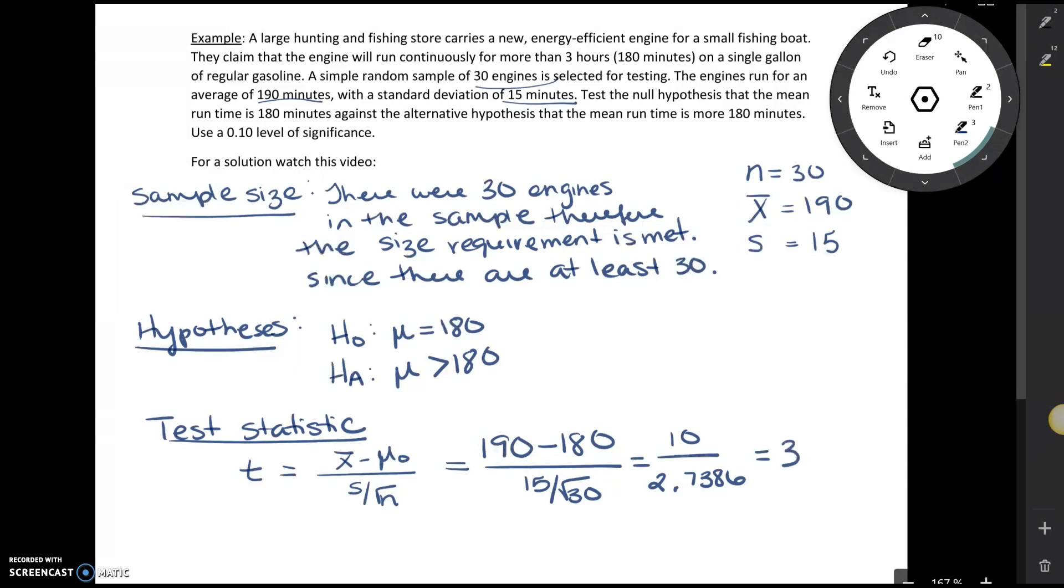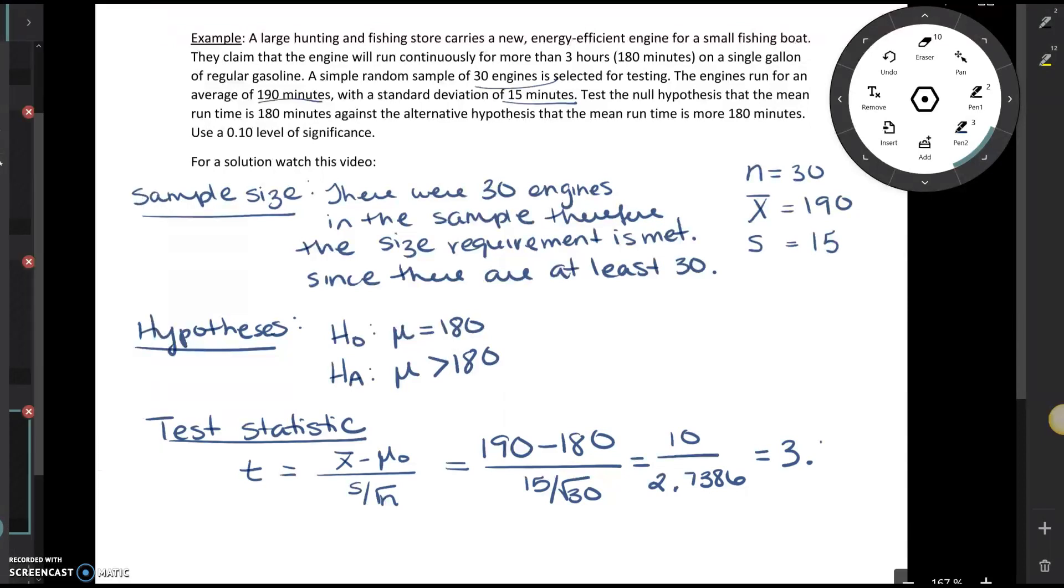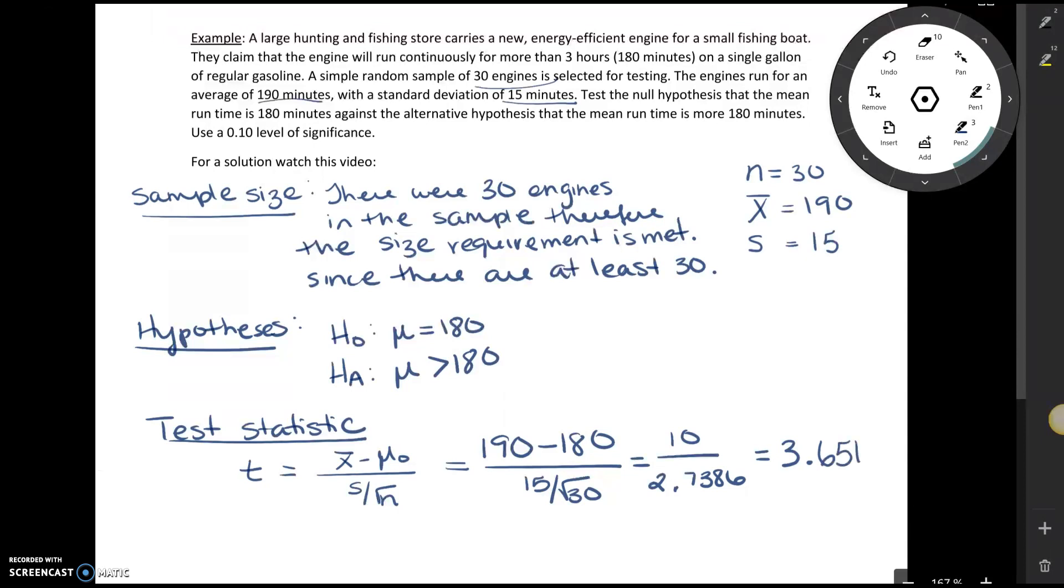Your test statistic, you're always going to round to two decimal places. Sorry, correction to what I was just saying. When we work with z, we're going to go to two decimal places. When we work with t, we go to four. So 3.6515.